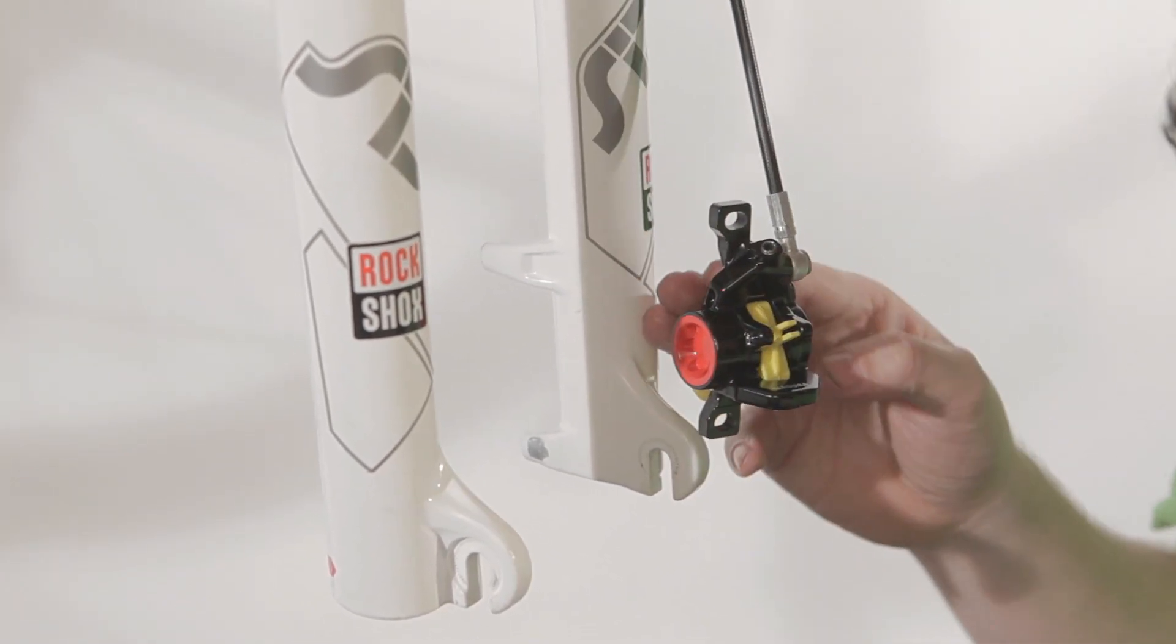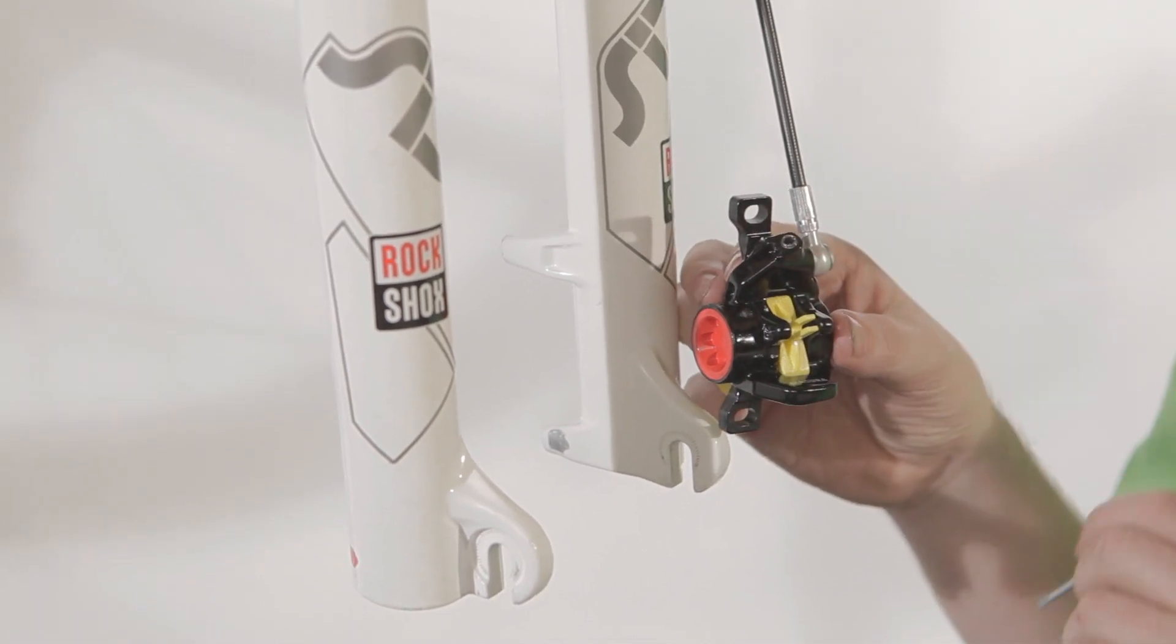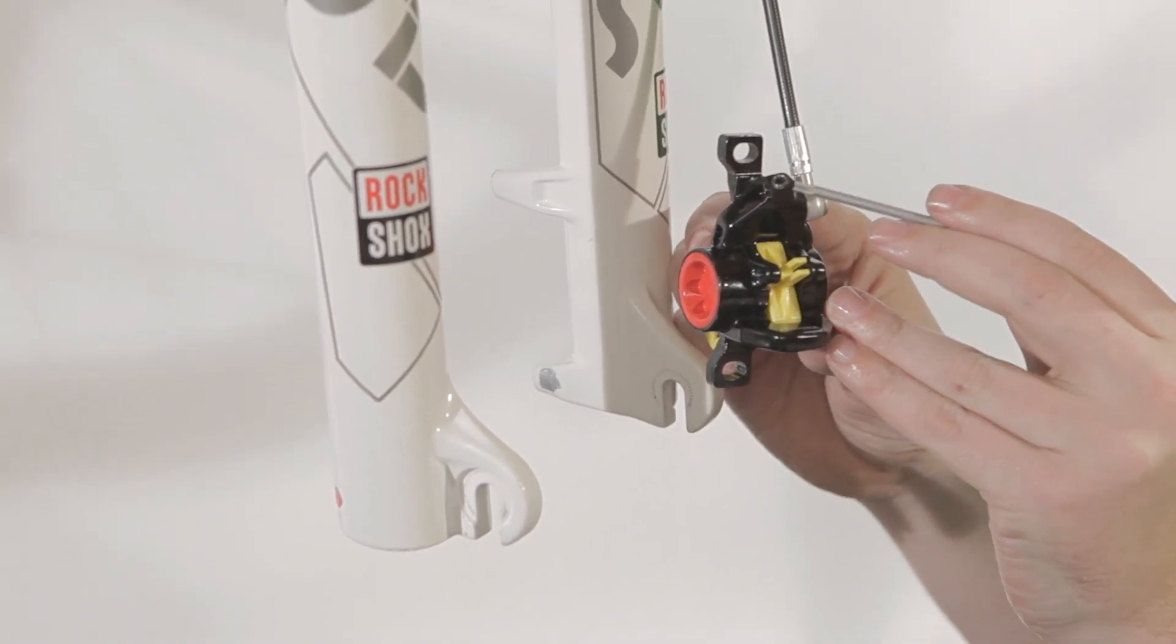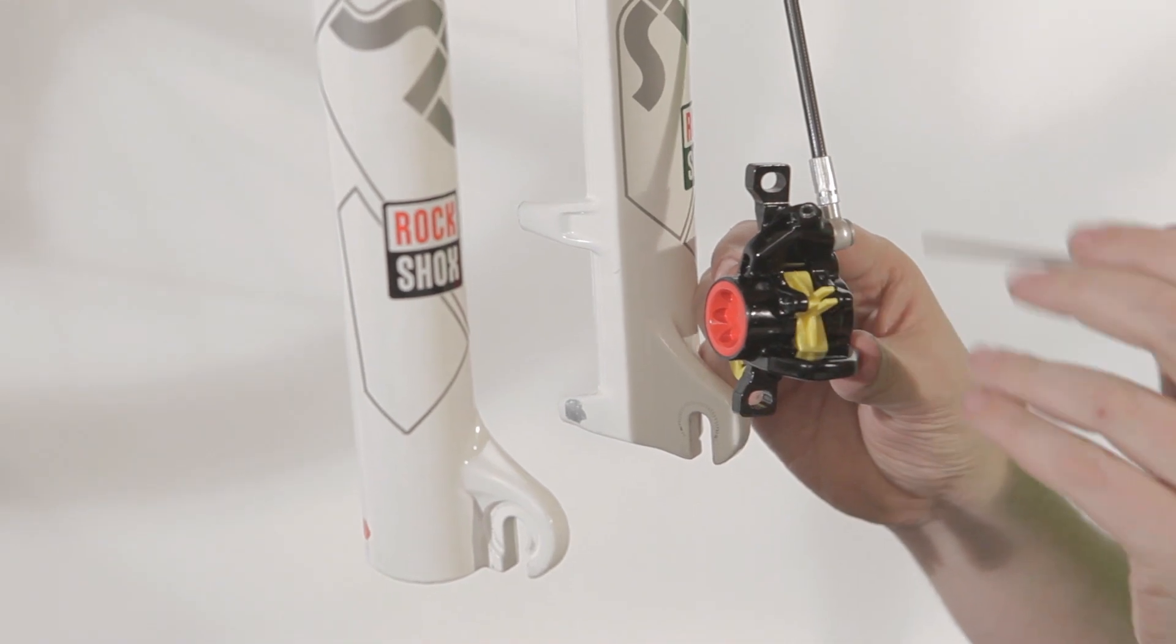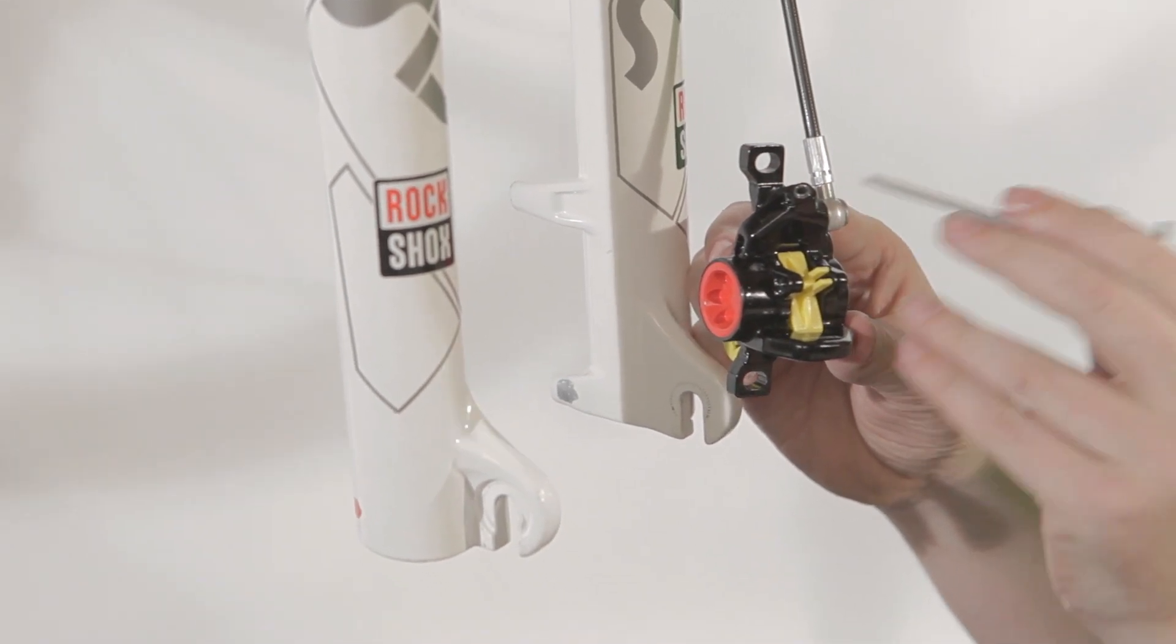Next step is to open up the bleed port, which is here. You want to make sure that the bleed port is always on top, because if you want to take out the air, it has to be at the highest point.